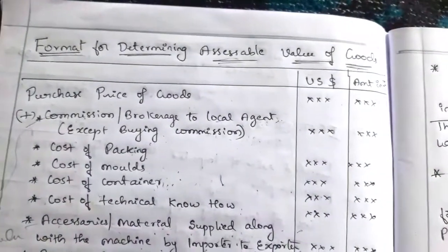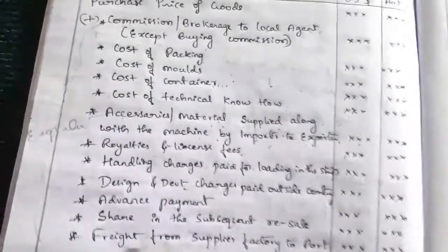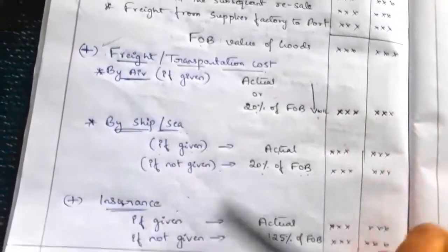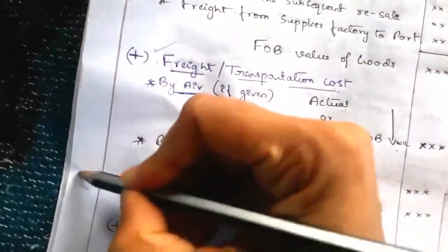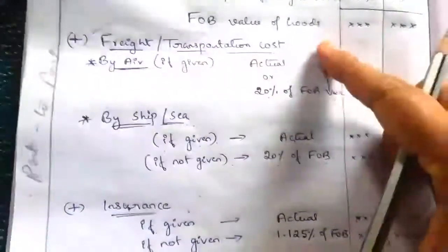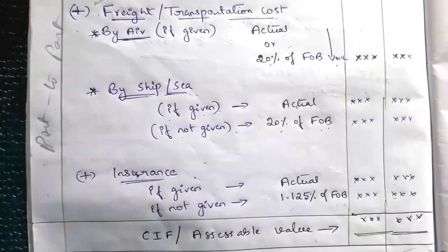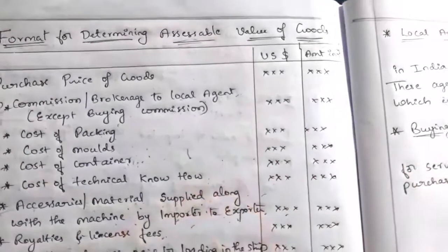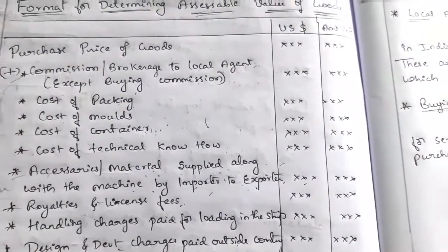So this is about the format for determining the accessible value of goods. Before FOB, add expenses incurred by the exporter at the exporter's place. After FOB, add expenses incurred from port to port — that is, from the exporter's port to the Indian port. Whatever expenses are incurred after paying the custom duty should not be included for computing the accessible value. The computation of accessible value and custom duty payable is very important for the Section C 16-mark illustration.